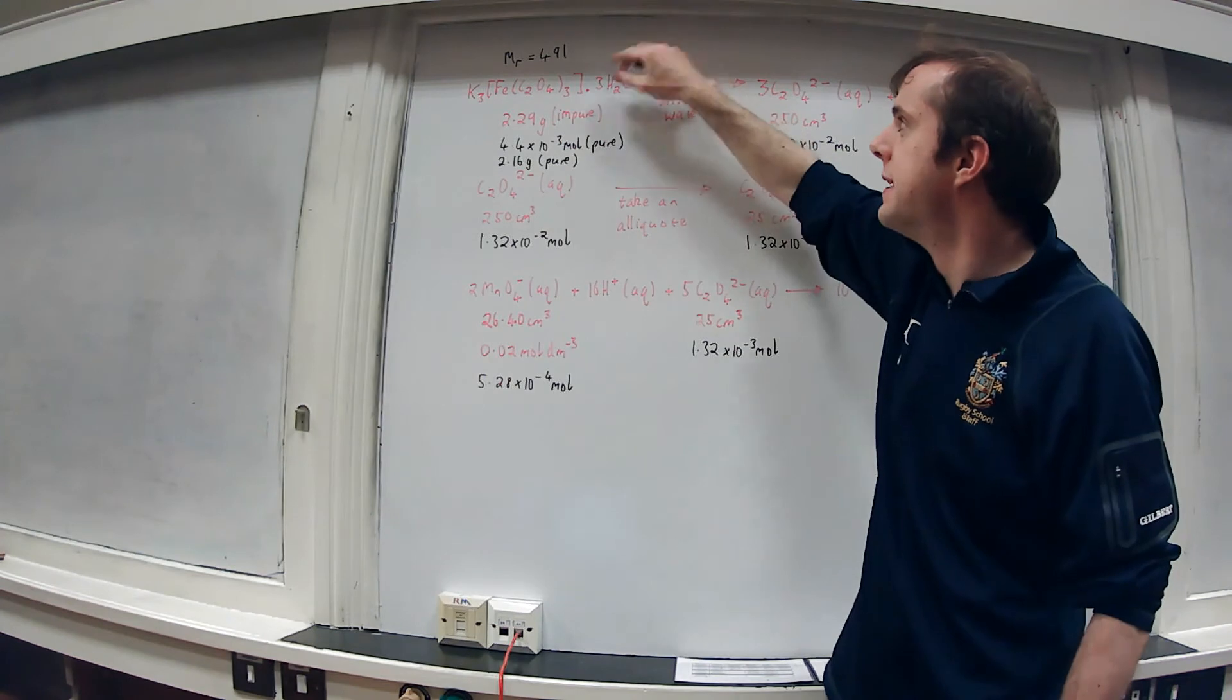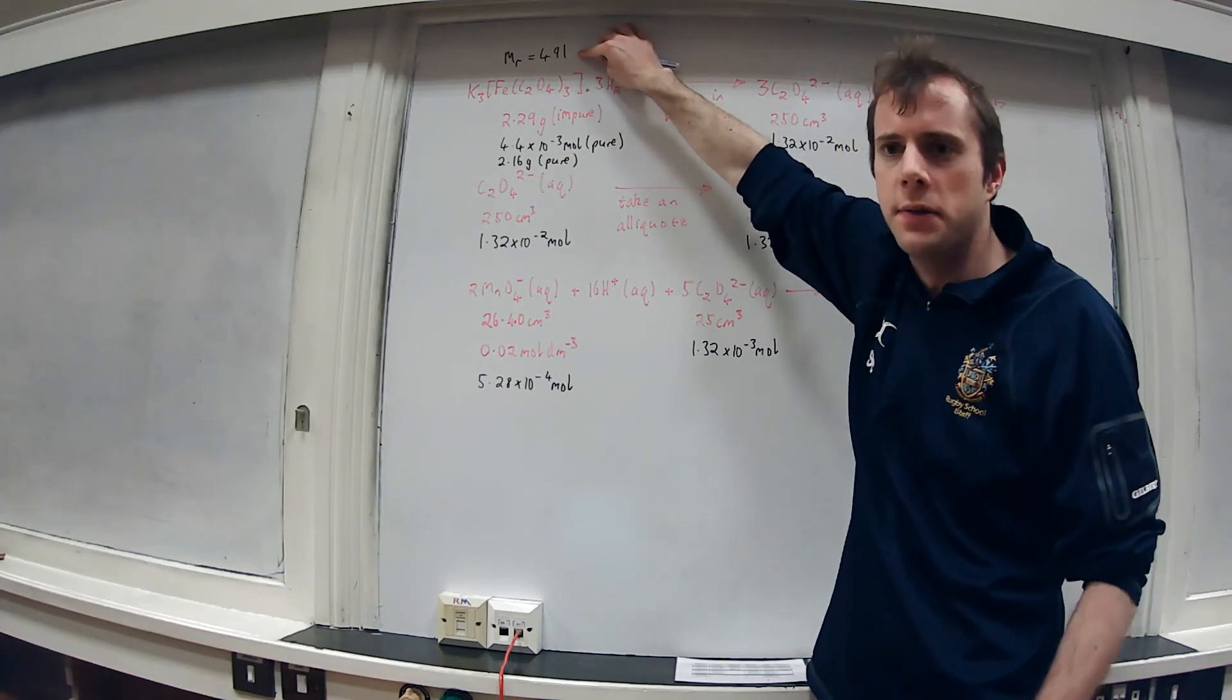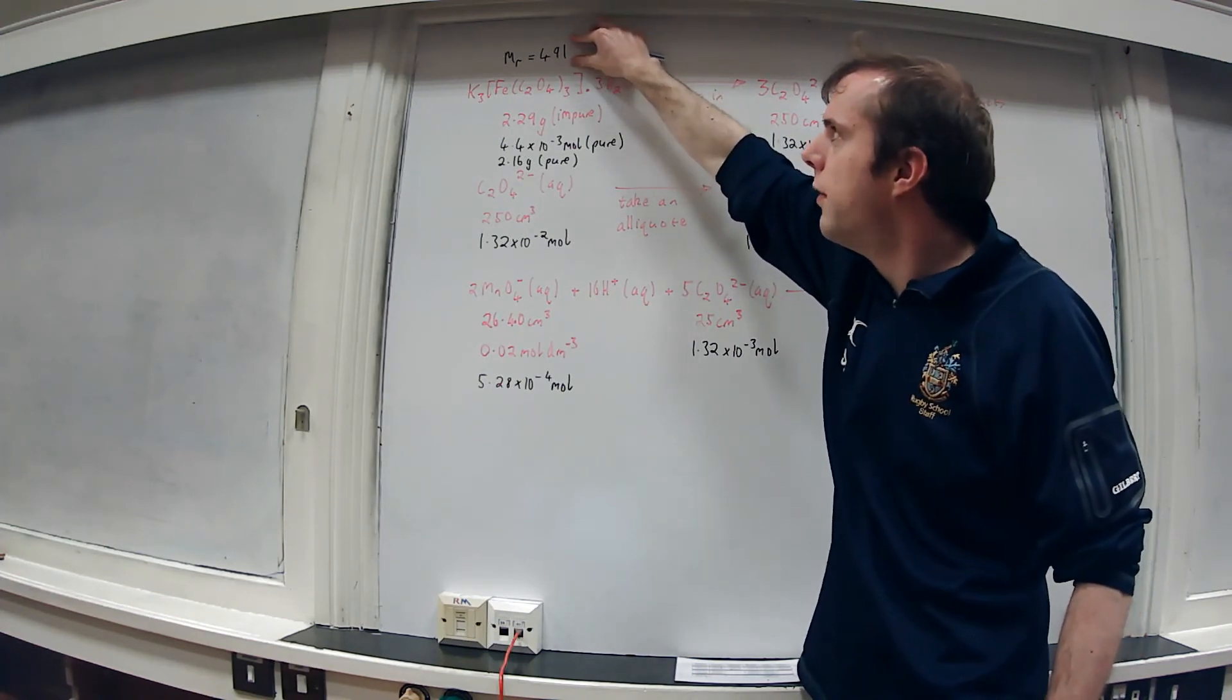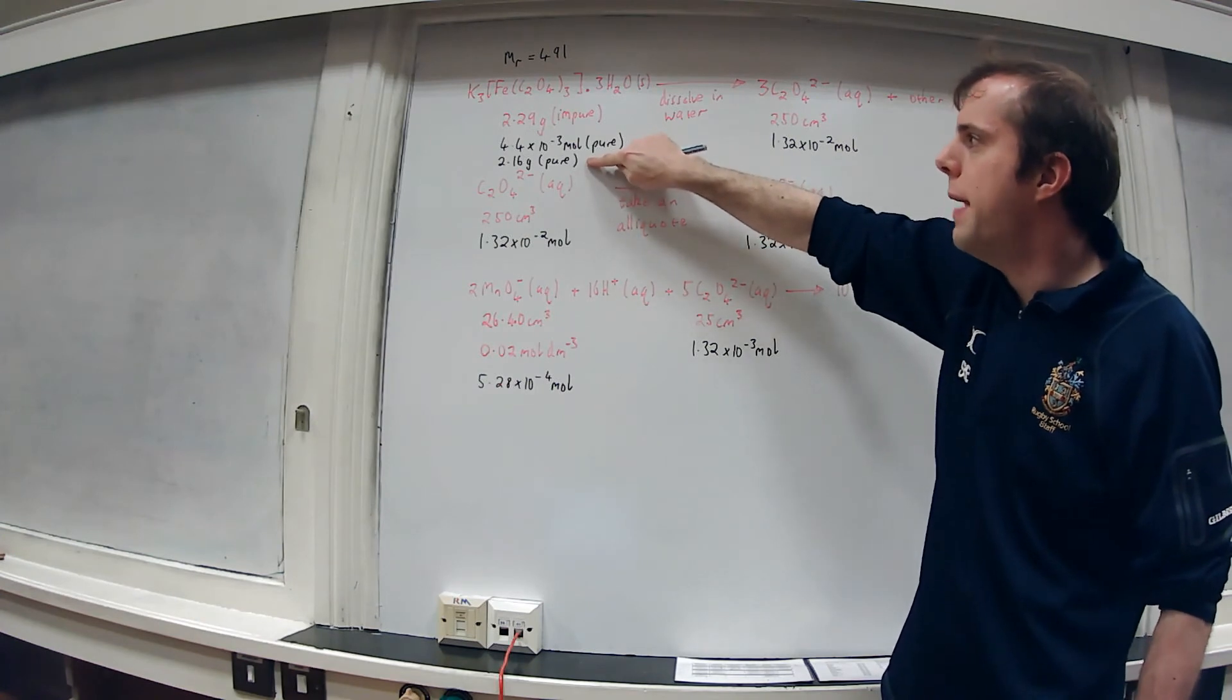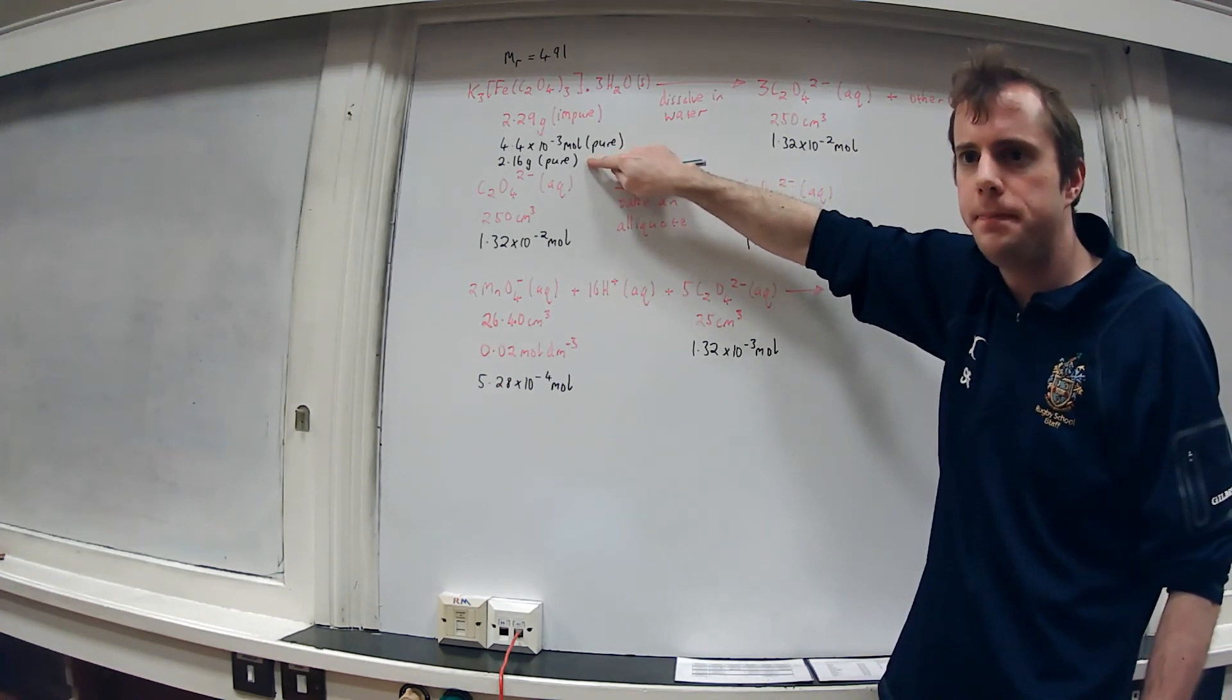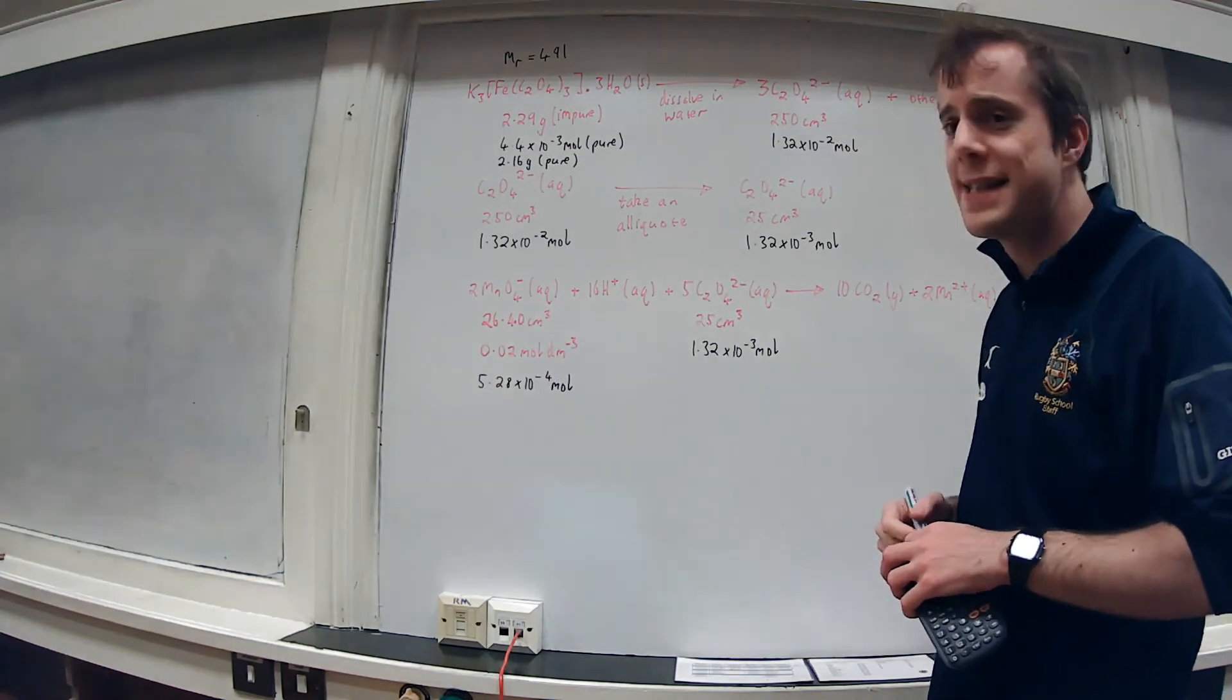The exact decimal place depends on the exact level of accuracy on your periodic table, but it should be around 491. We take that number, multiply it by the number of moles, you get a pure mass of 2.16 grams.